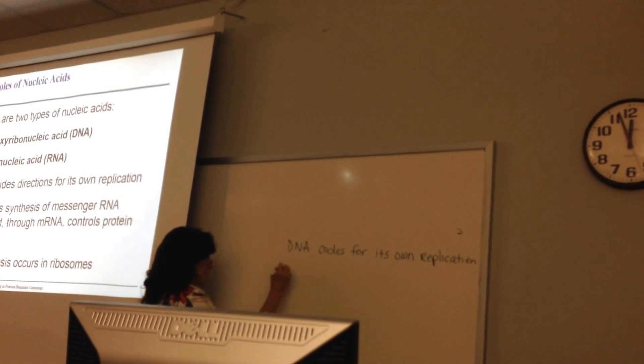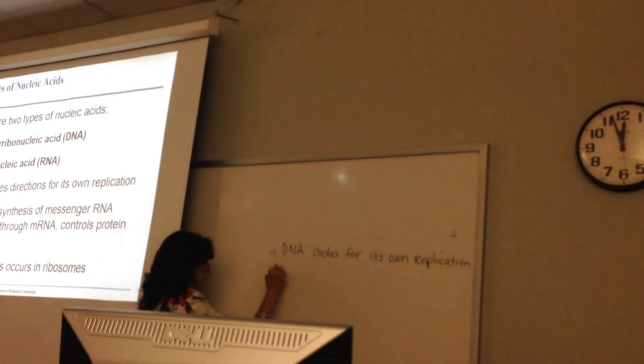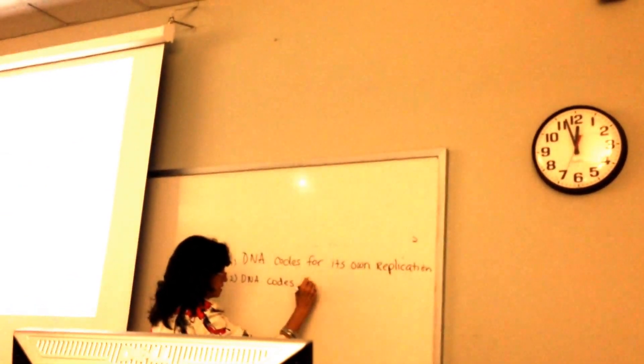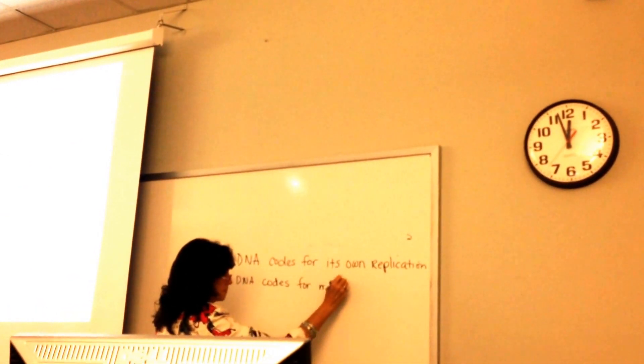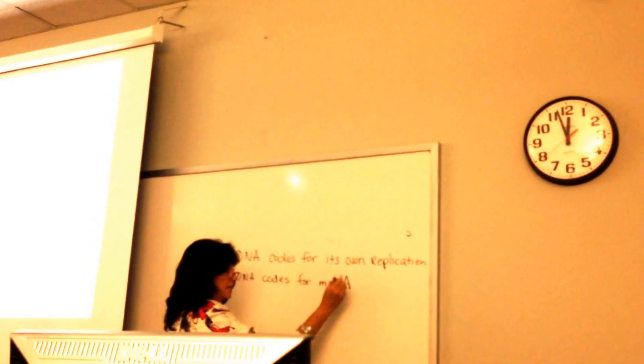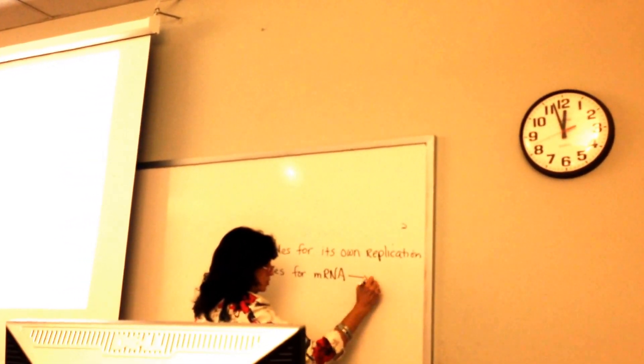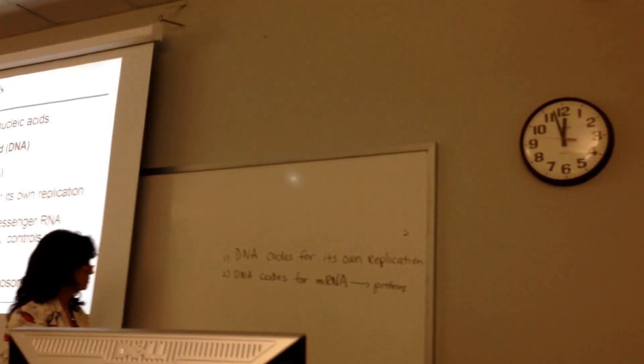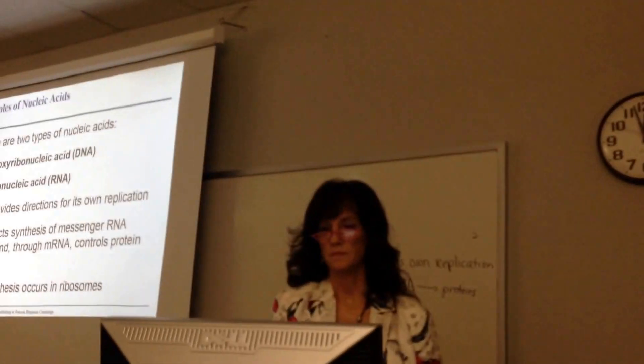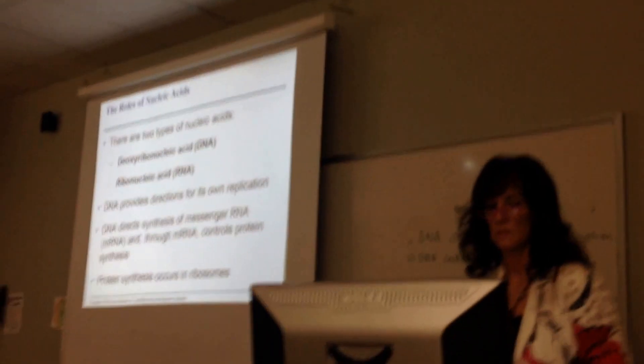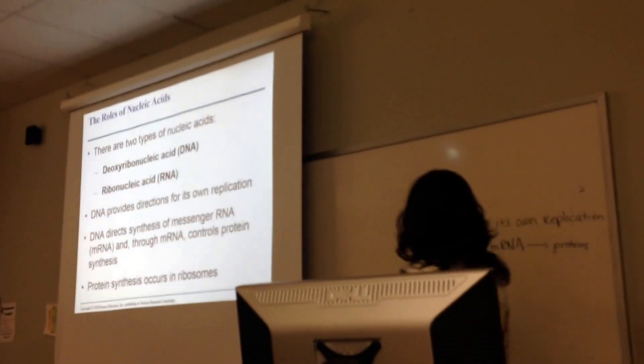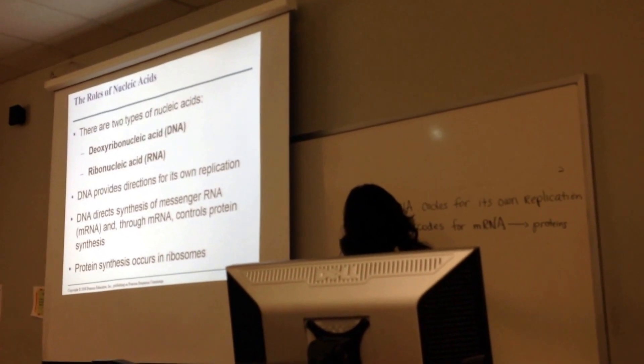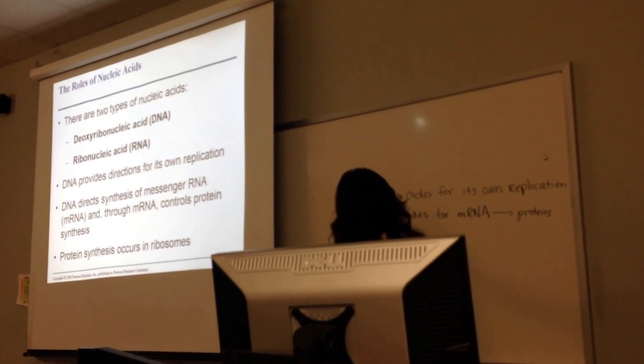But that's not all. DNA also codes for messenger RNA. And messenger RNA is going to then code for amino acids, which will end up coding for proteins. So the DNA, from the DNA, you get messenger RNA. DNA will code for your messenger RNA.